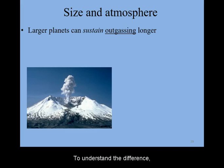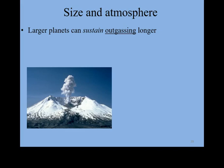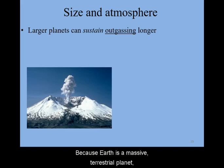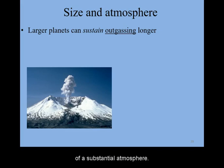To understand the difference, first we must look at the origin of the current atmosphere of Earth. This is thought to be from outgassing from the interior of the Earth due to volcanism. Because Earth is a massive terrestrial planet, it continued being volcanic for a long period of time, which allowed for the build-up and replenishment of a substantial atmosphere.